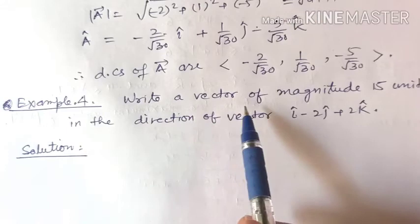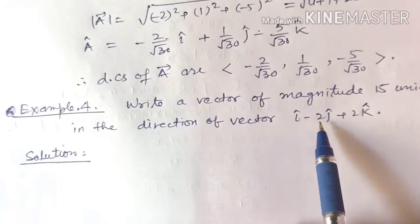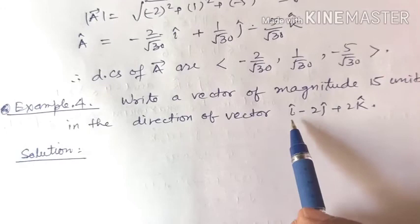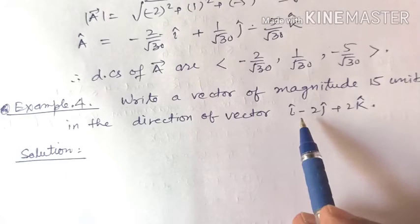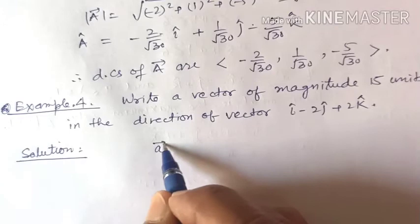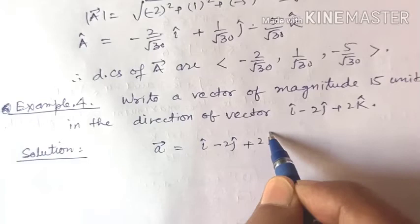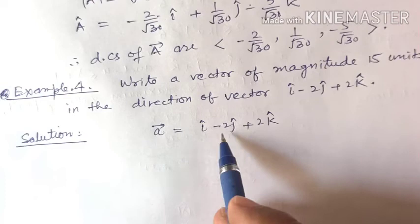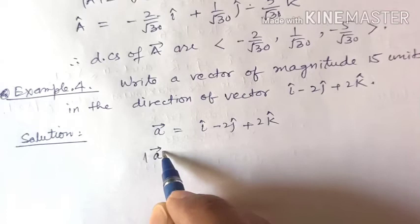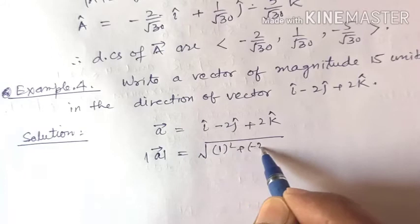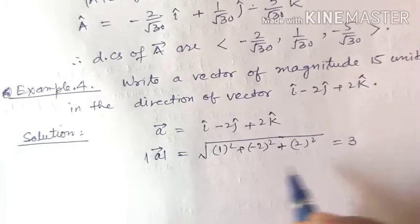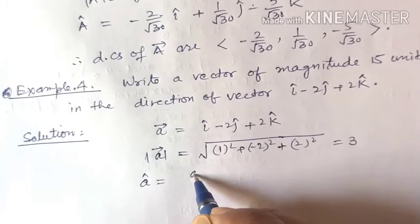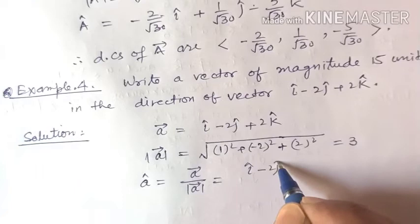Example 4: Write a vector of magnitude 15 units in the direction of vector i minus 2j plus 2k. The unit vector in the direction of i minus 2j plus 2k is the vector divided by its magnitude. The magnitude equals square root of 1 squared plus 2 squared plus 2 squared, which equals 3. So the unit vector is i minus 2j plus 2k divided by 3.